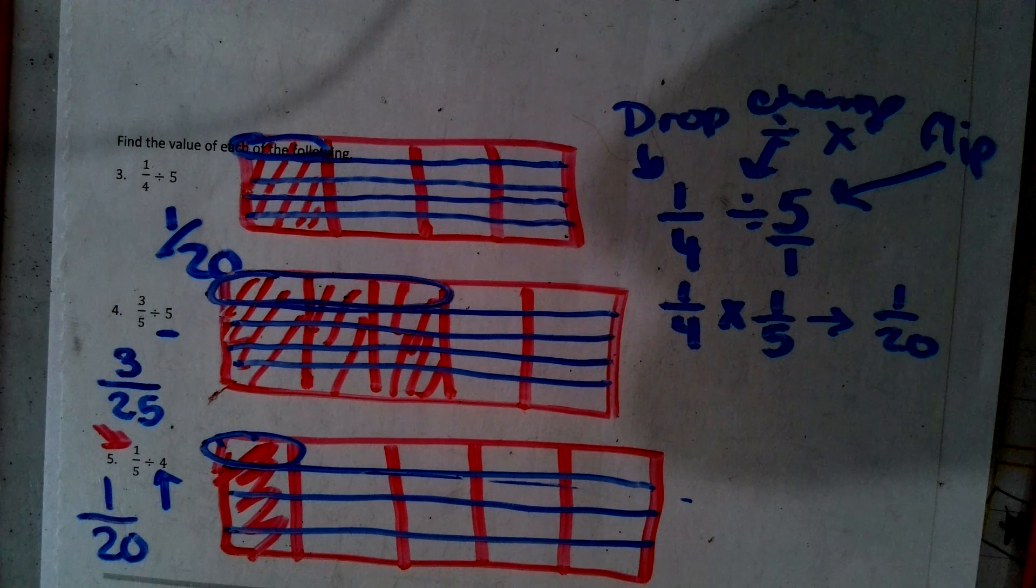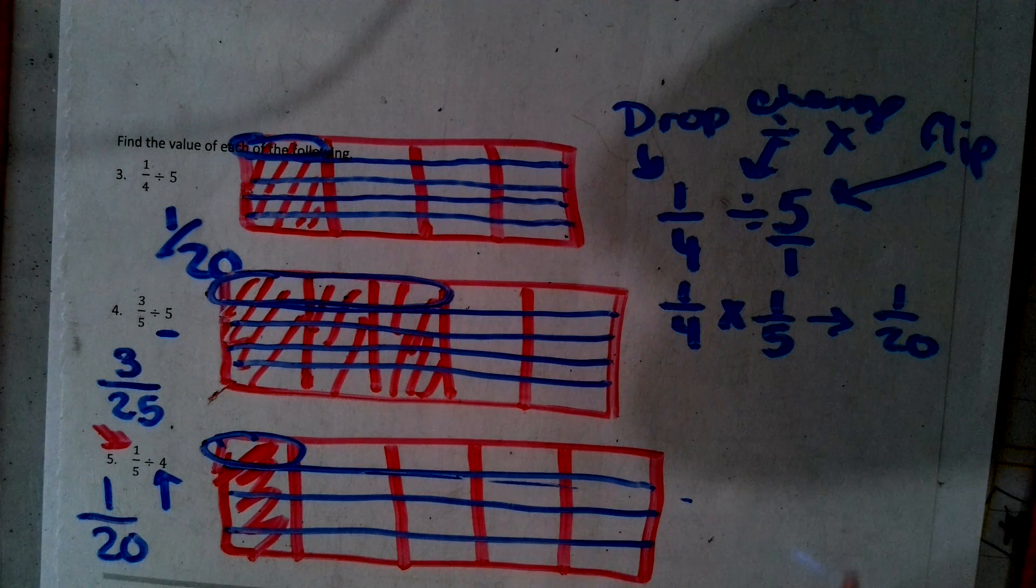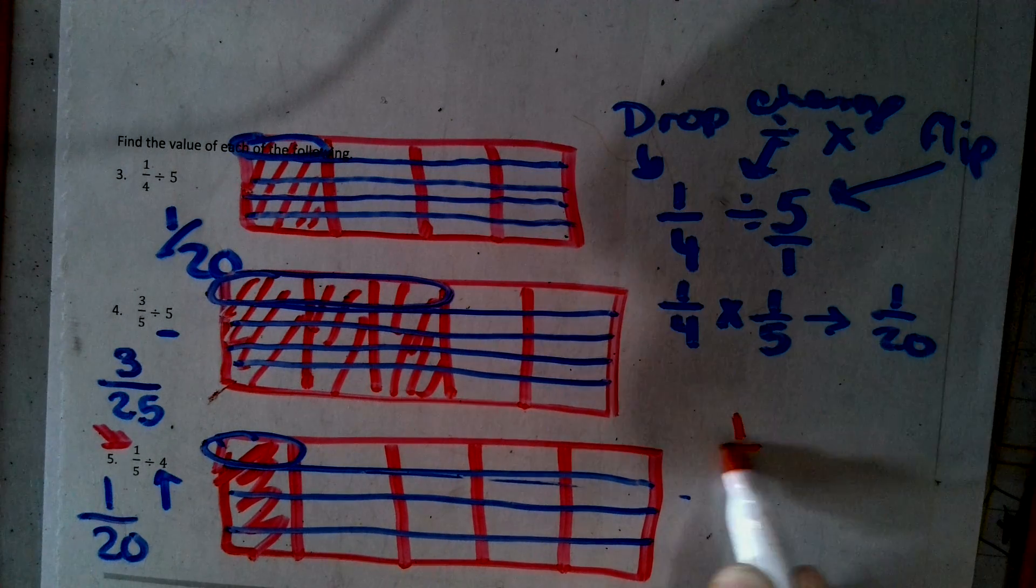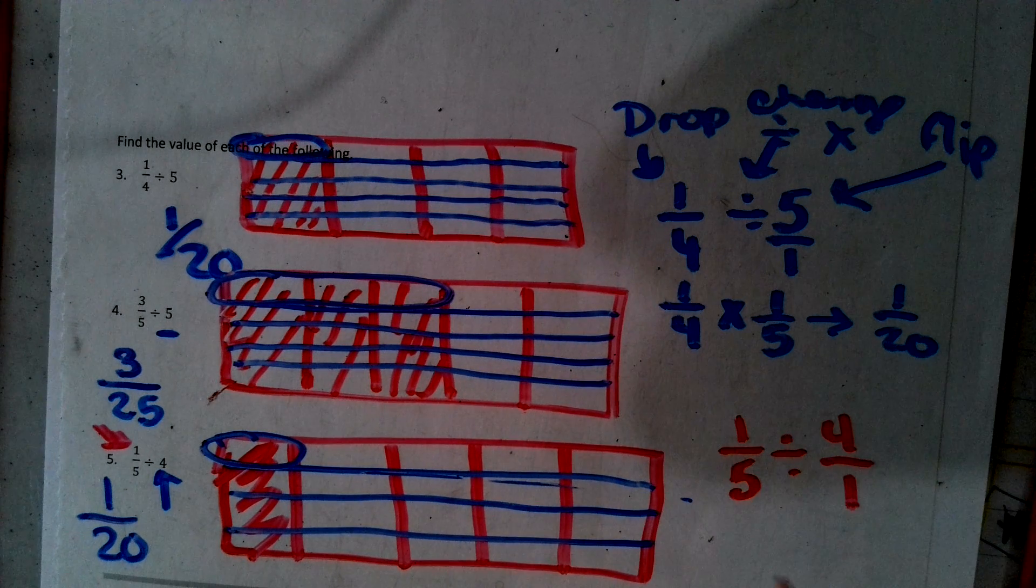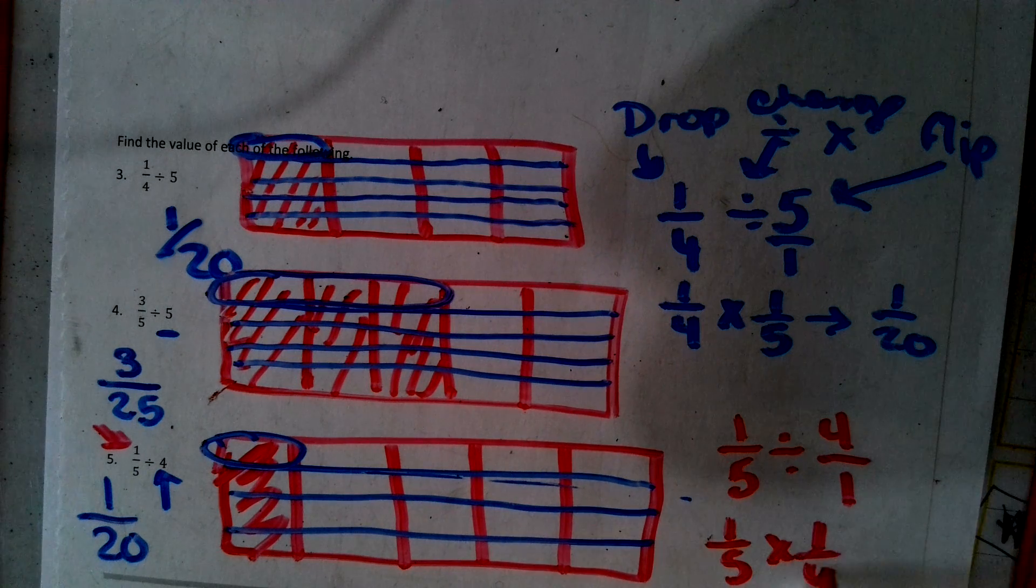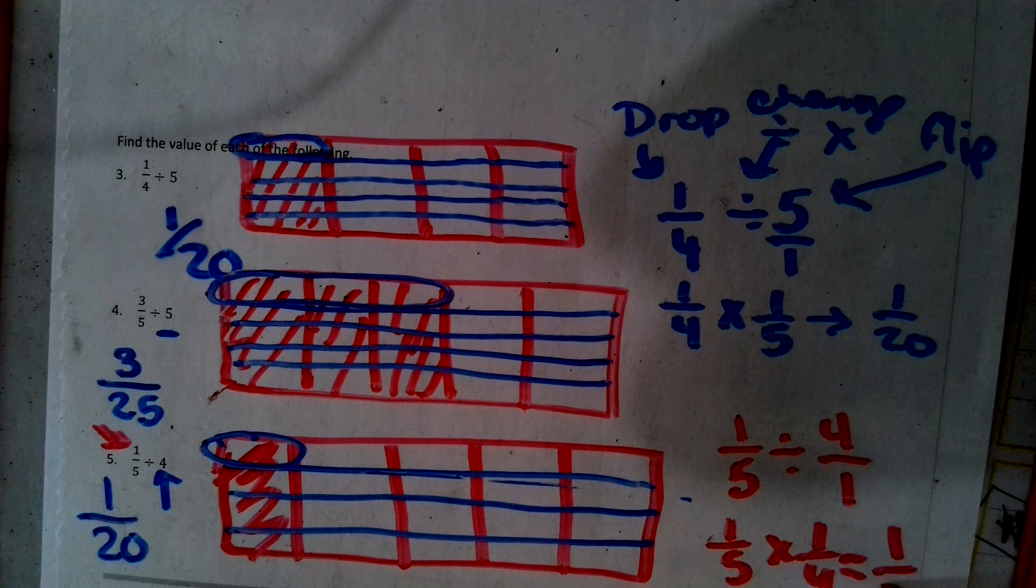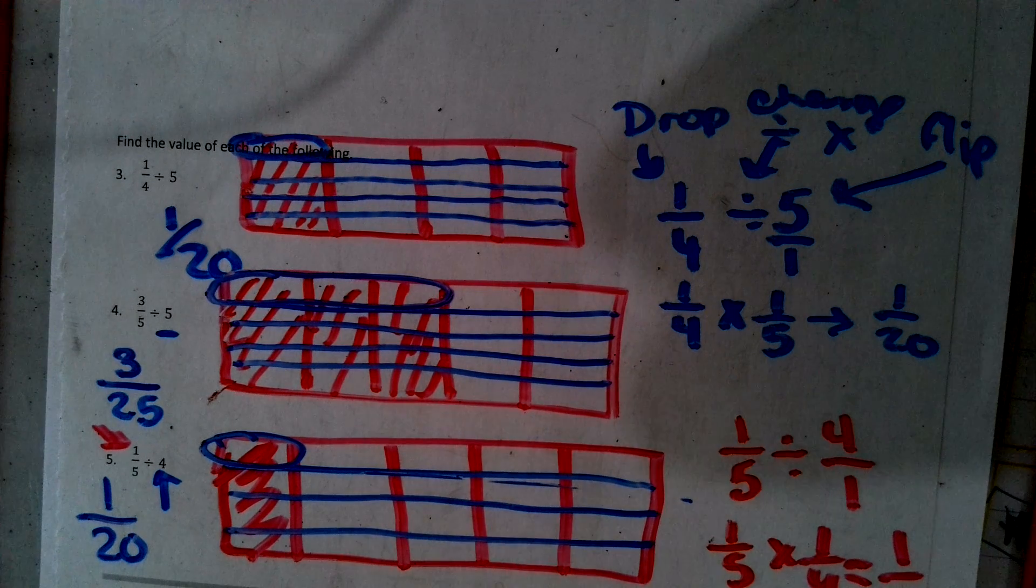Okay. Now, let's look at it in standard algorithm. 1/5 divided by four. All whole numbers go over one. Drop. Change. Flip. We get 1/20. Oops. There.